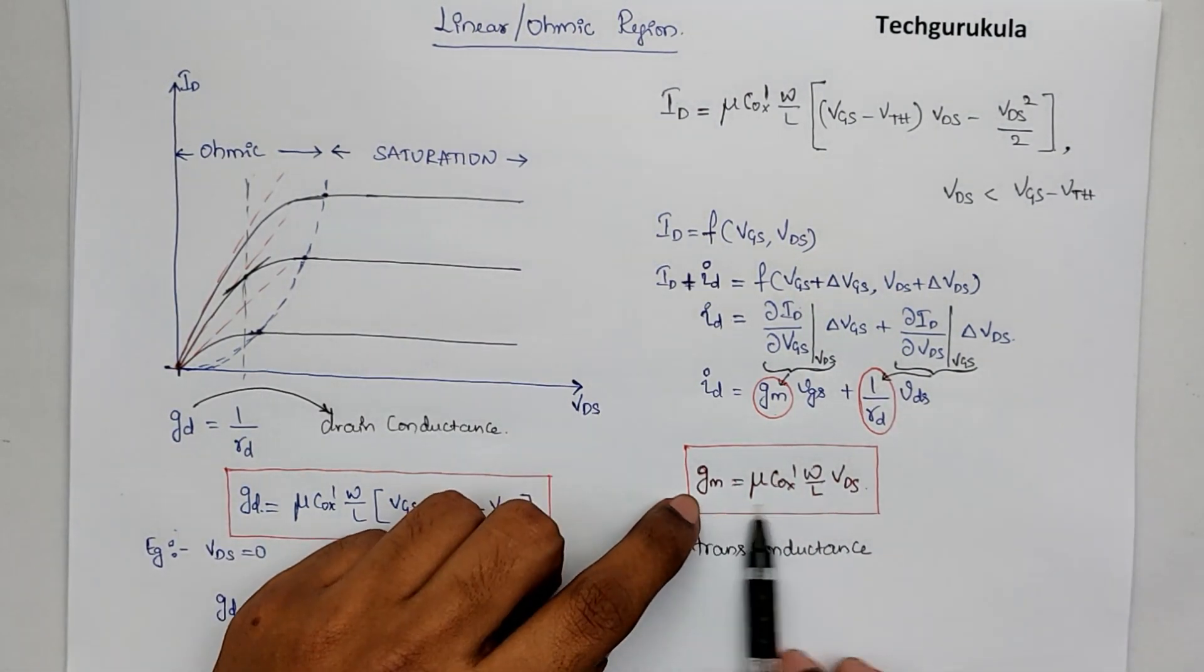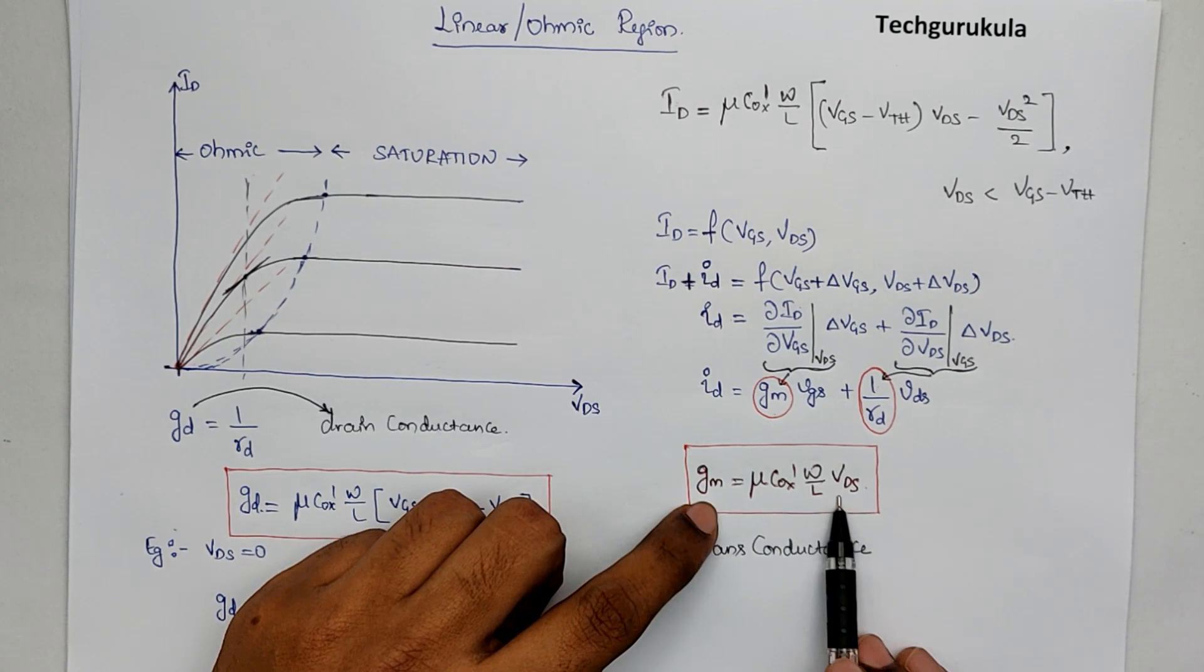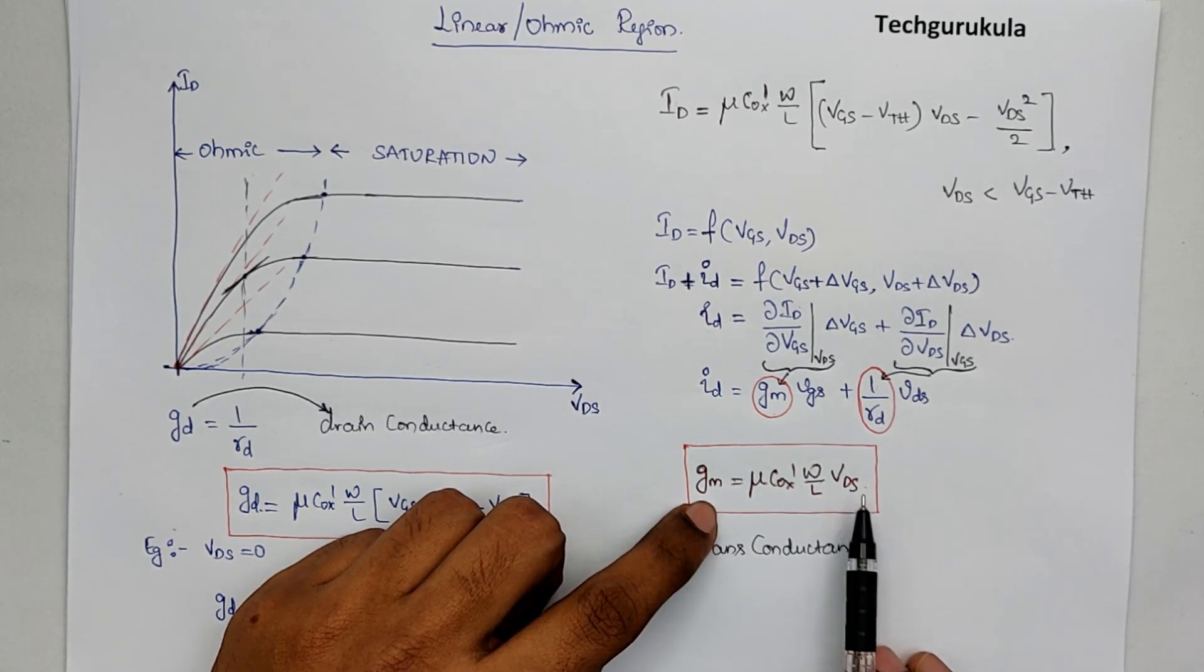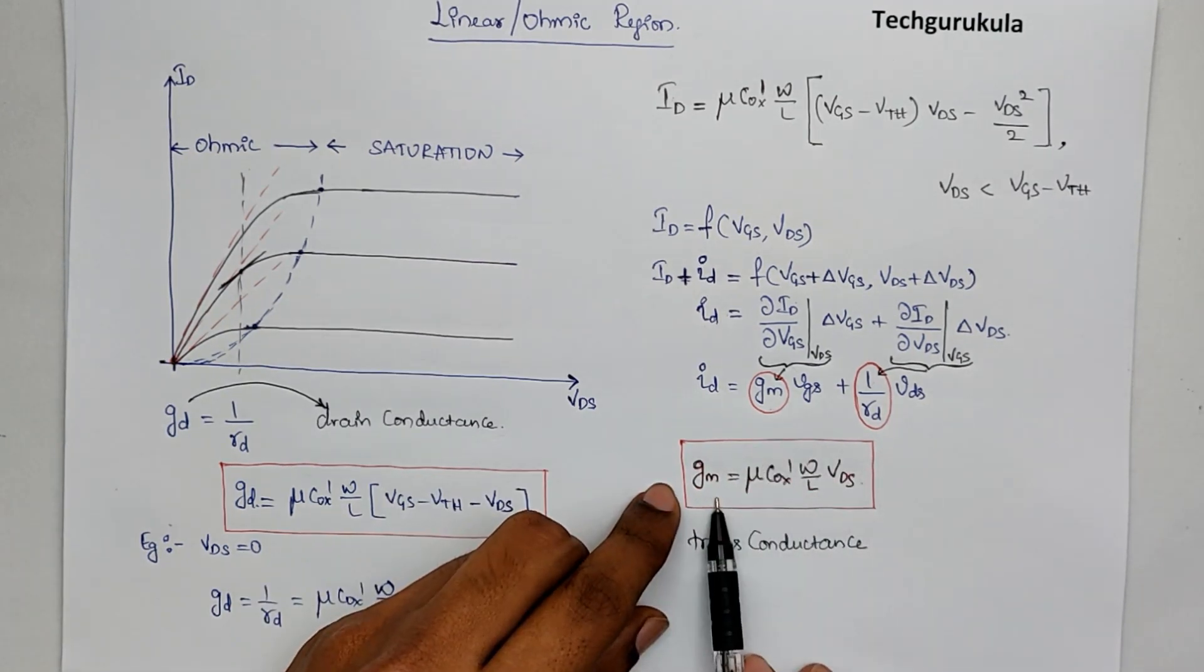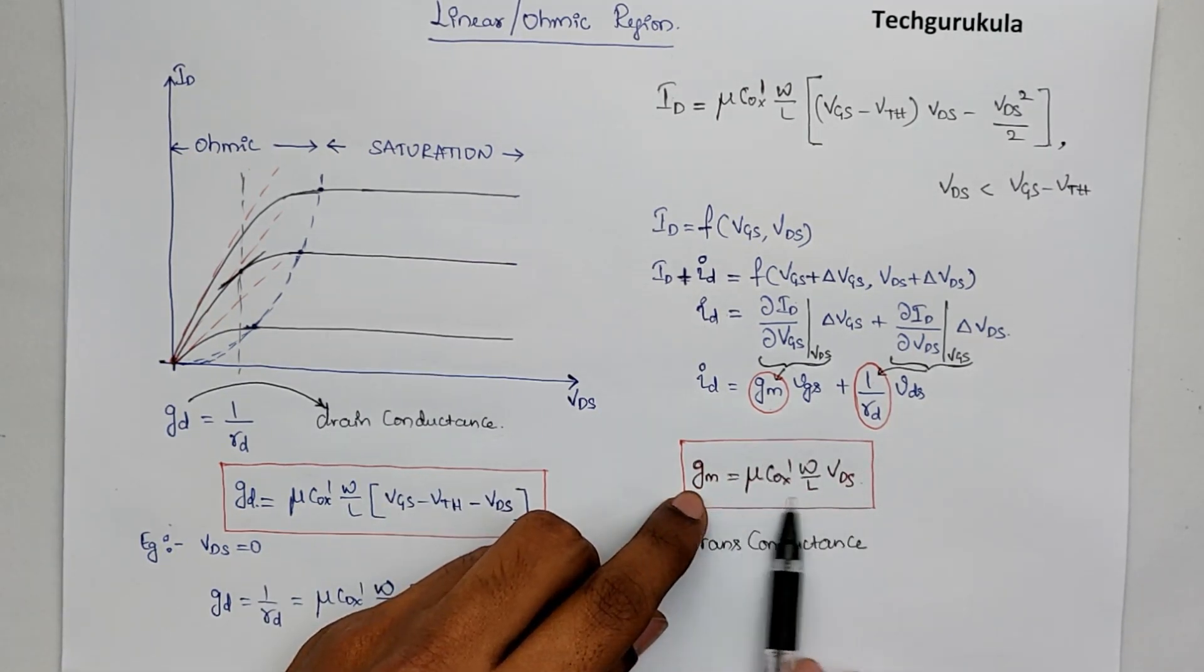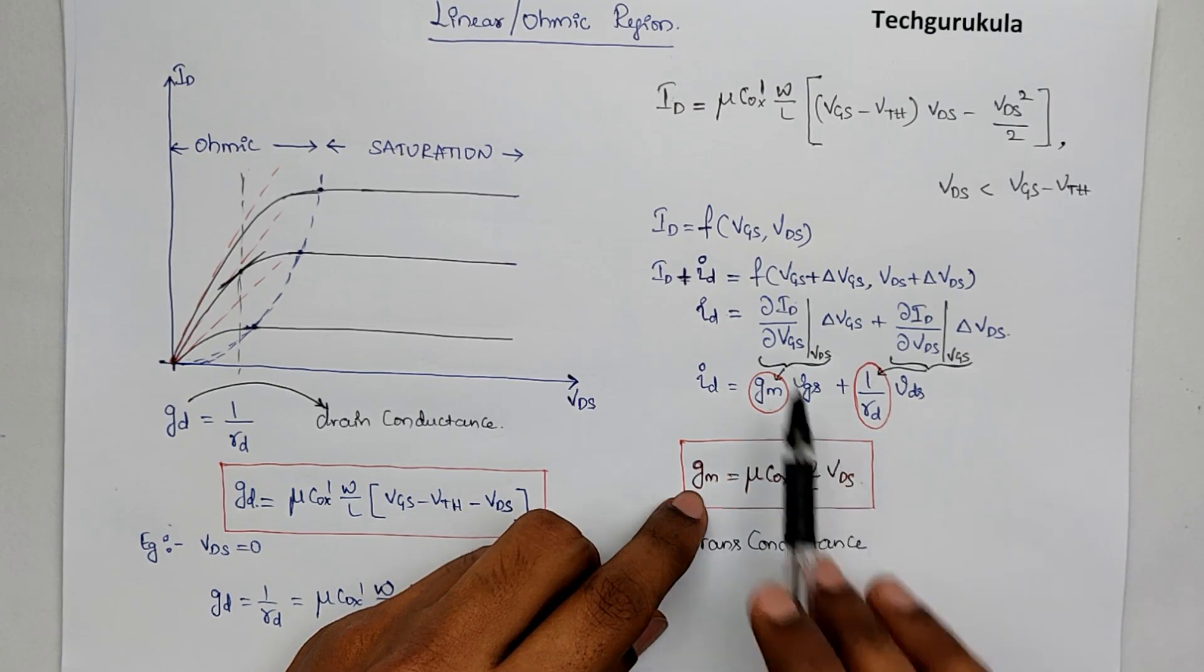If you observe this value, it depends on VDS. Of course, at any given VDS, we can find this value GM. And in fact, GM here doesn't depend on VGS. It depends only on the VDS in linear region.